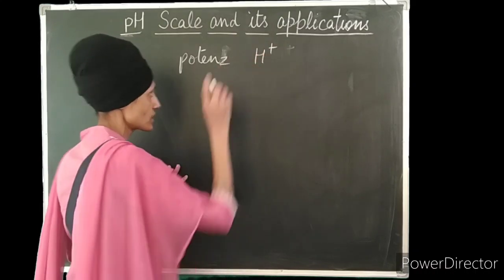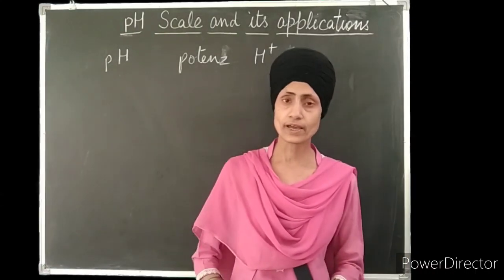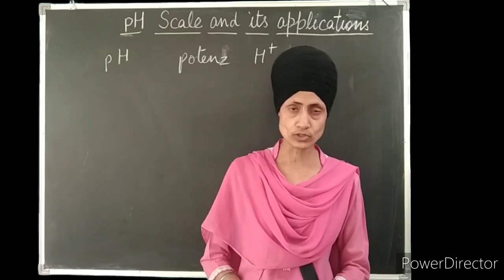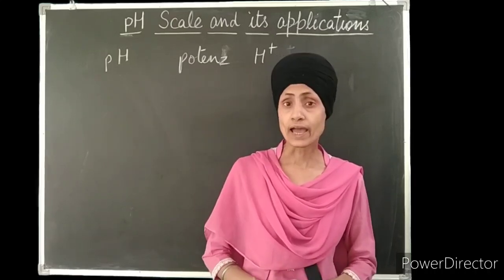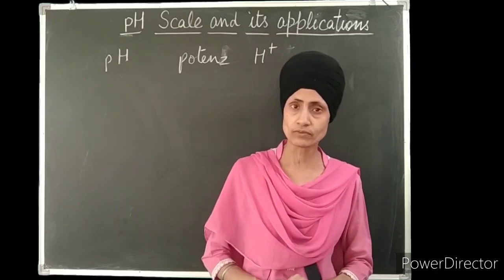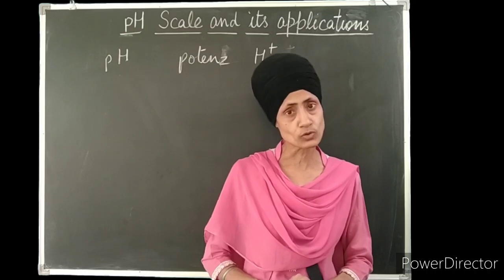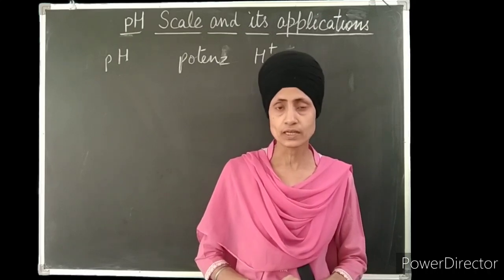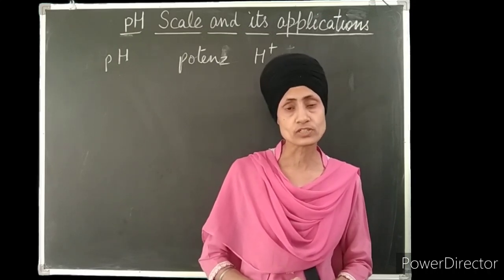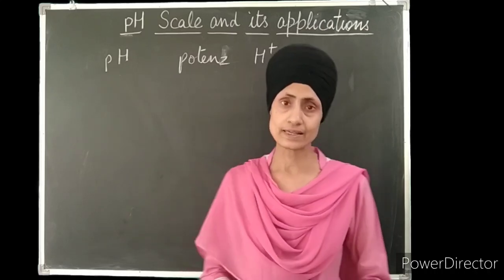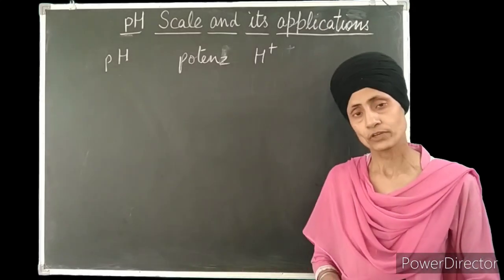P stands for potence and H stands for H+ ions. Potence of H+ ions means the power of hydrogen ions. More is the power of hydrogen ions in a solution, more acidic it will be. More means the strength of the acid will be more. And if the amount of H+ ions is less, its acidic strength is less, meaning it will be a weak acid.